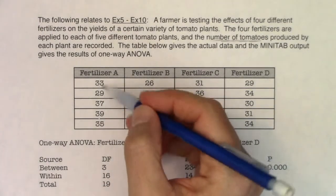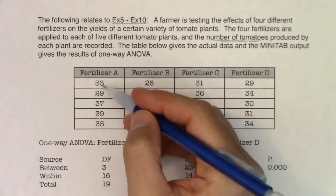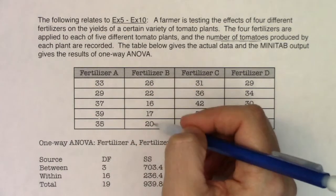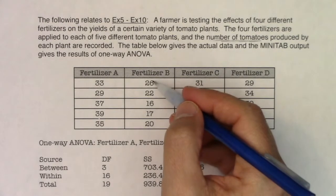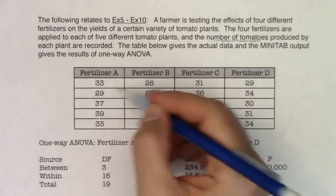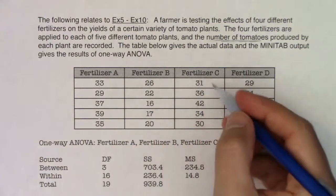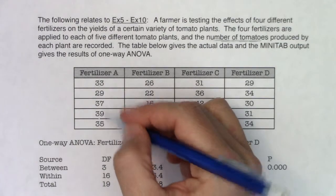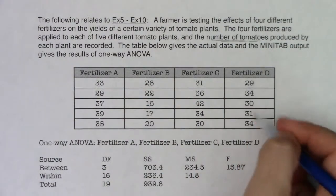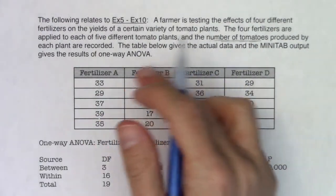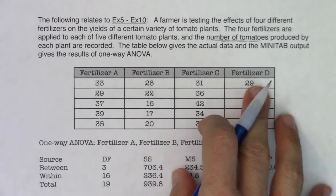Looking at the data, mid to low 30s seems to be the average for fertilizer A. Fertilizer B doesn't look as good — the high was 26 and the low was 16, which looks a lot different than fertilizer A. Fertilizer C looks pretty solid, comparable to fertilizer A. Fertilizer D might be on the lower side but still somewhat comparable to A and C, so it looks like something might be up with B just from looking at the data.